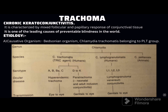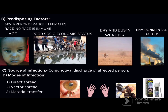The predisposing factors: trachoma is predominantly seen in females, no race is immune, and no age bar exists, though infection is usually contracted during infancy and early childhood. The disease is more common in poor socioeconomic classes due to unhygienic living conditions, overcrowding, unsanitary conditions, abundant fly population, paucity of water, lack of separate towels or handkerchiefs, and lack of education about spread of contagious disease.